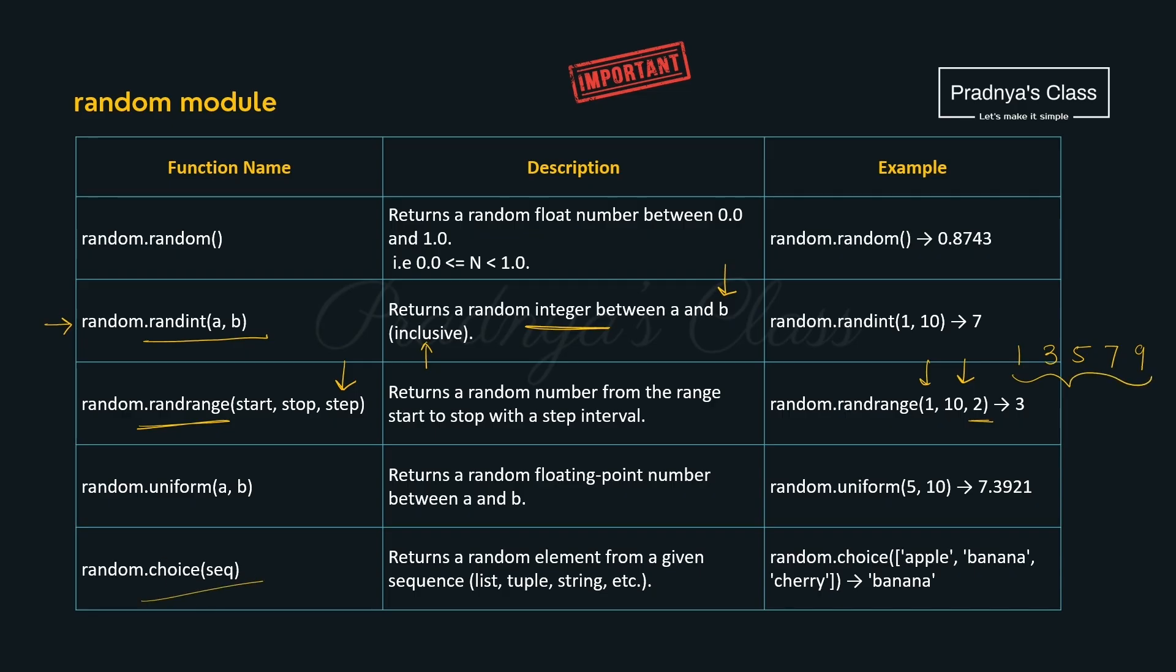Now let's discuss one more function choice. From the given data which can be in the form of list tuple or string, it will choose a random element. How it will work? Look at the example. We are providing a list of string. Out of that one random element got selected. Hope you are clear with the usage of all these functions.